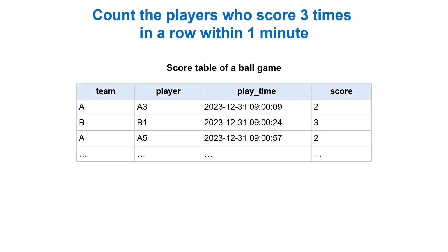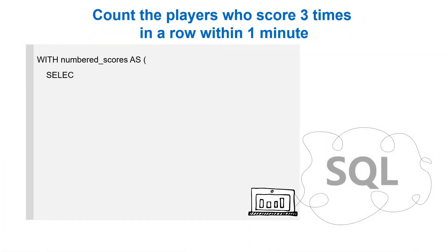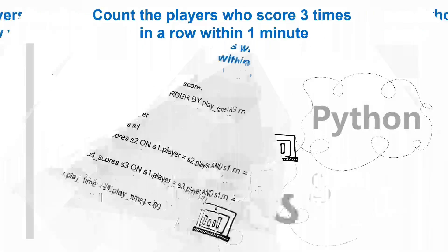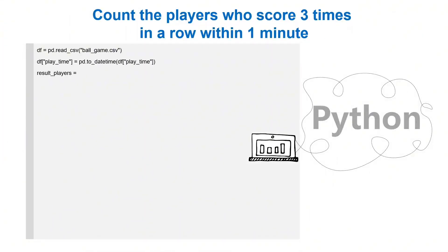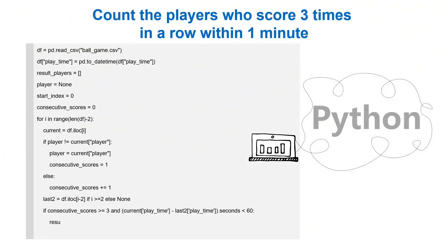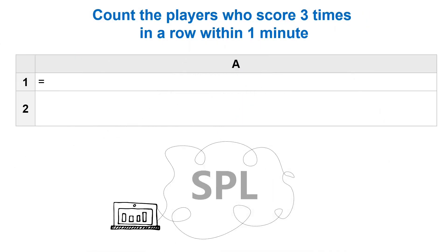Score Table of a Ball Game. Count the players who score 3 times in a row within 1 minute. The SQL. Then Python. And SIPL.